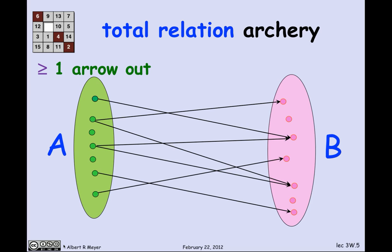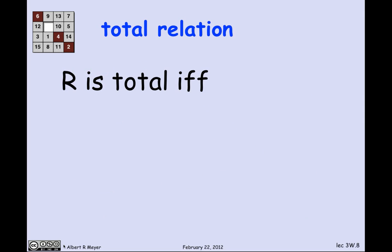Let's begin with the idea of a total relation. A total relation means there's at least one arrow out of every domain element. Looking at this picture, it's not quite total yet because there are two green domain elements with no arrows out of them. After removing those elements, we're left with a total relation where every domain element has at least one arrow coming out of it.